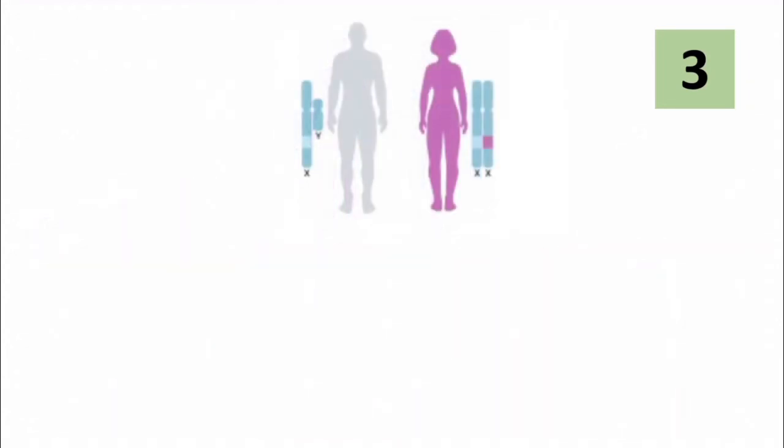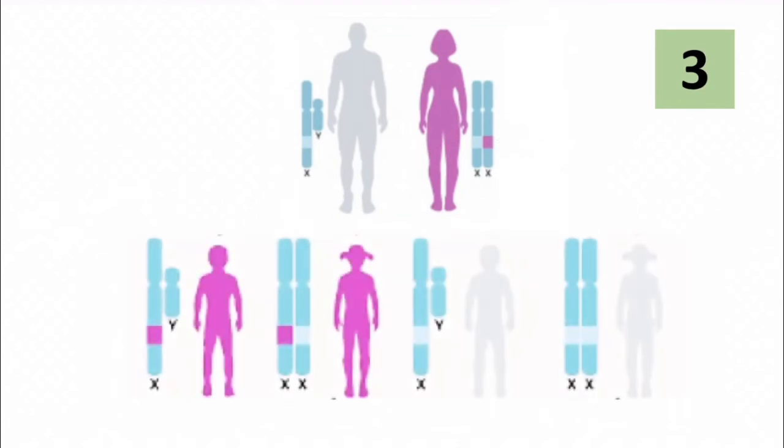Now, let's consider another scenario. Here, mother has got the mutation. Sons and daughters both receive X chromosome from mother. So, sons and daughters who will inherit the mutated gene will be affected.